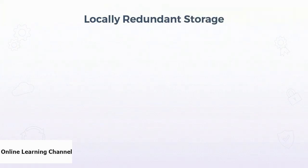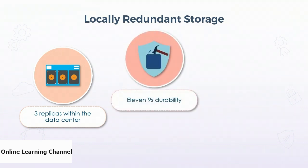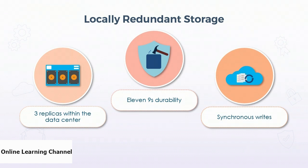Locally redundant storage is automatically enabled for all storage accounts. It replicates the data three times within a single data center in the primary region, across different storage arrays in different aisles, removing component liability from causing an outage. Locally redundant storage offers 11 nines of durability. Durability is a measure of the likelihood of loss of data through corruption or component failure, but is not reflective of availability. Data in a locally redundant storage configuration is written synchronously to all three locations, so a component or rack failure will not affect data consistency.